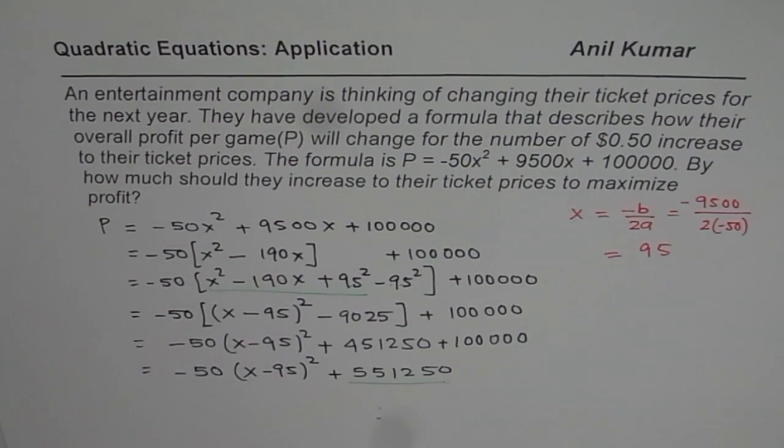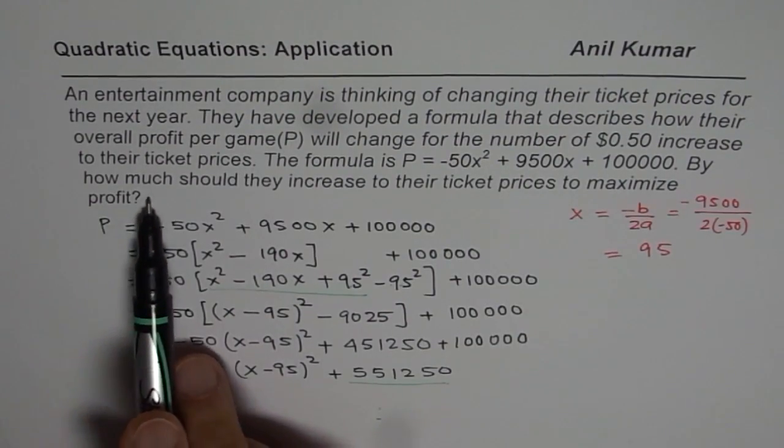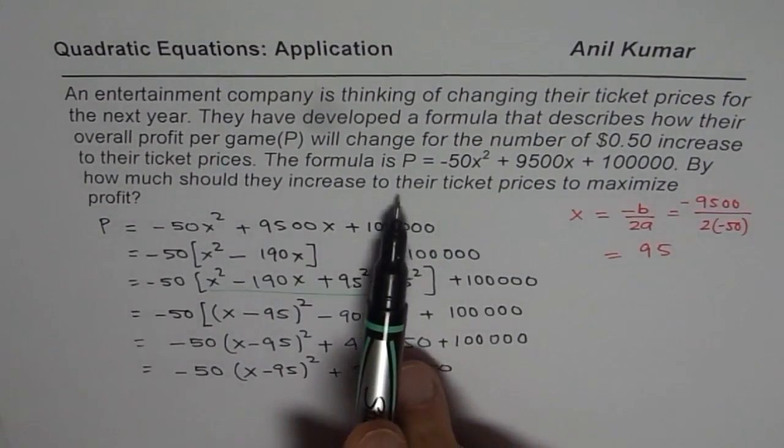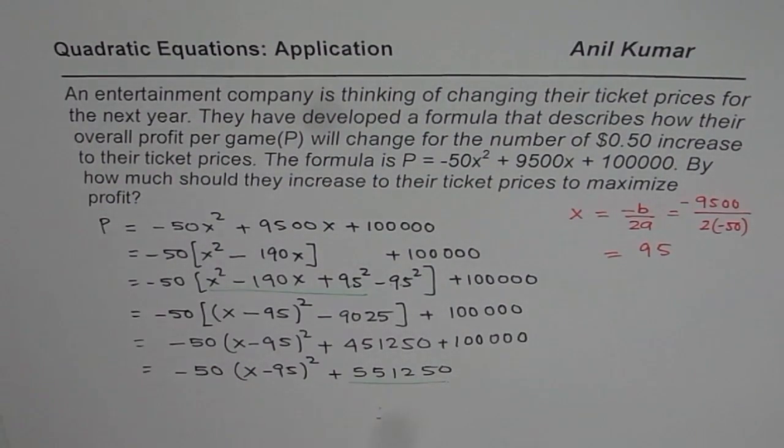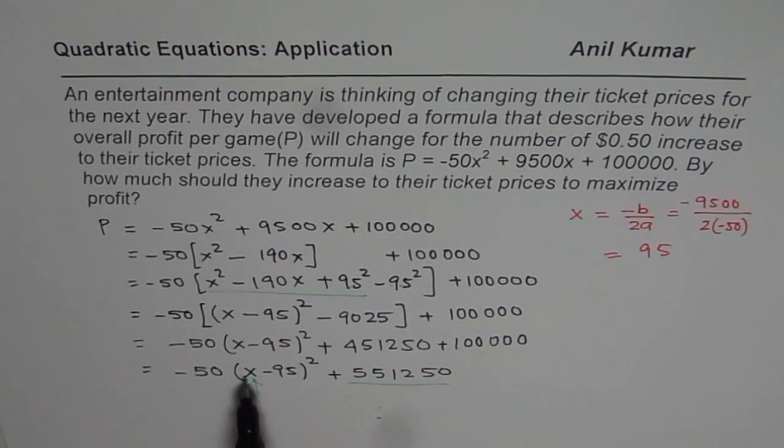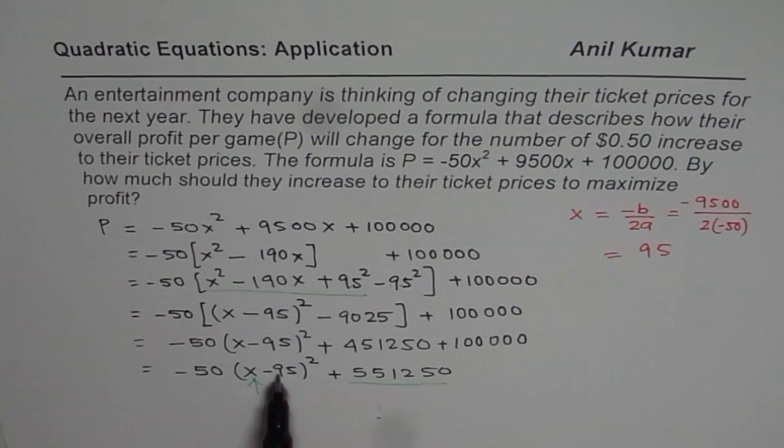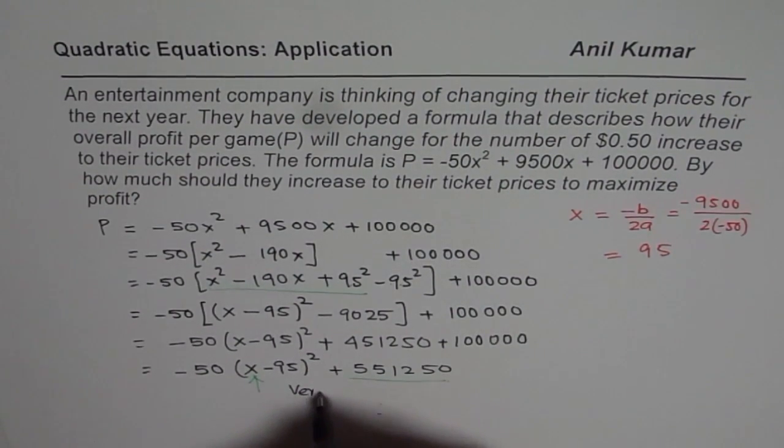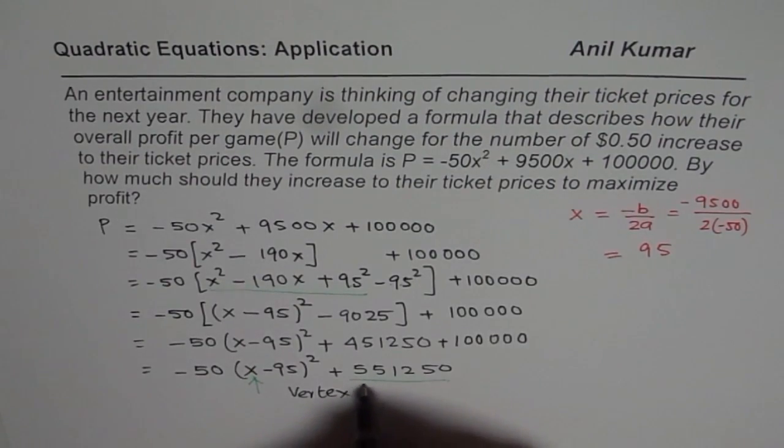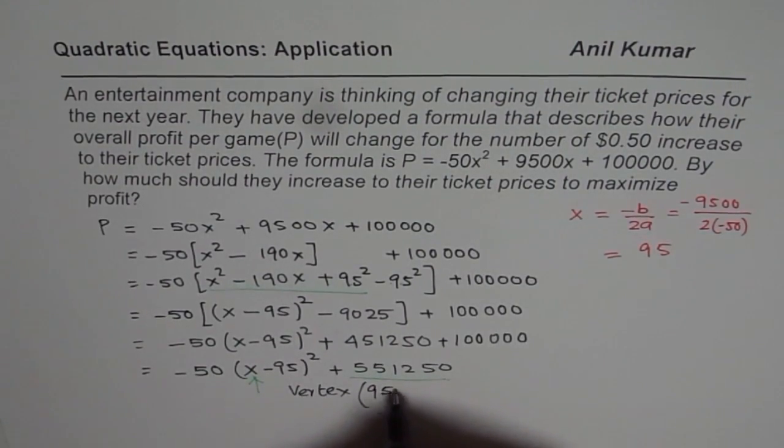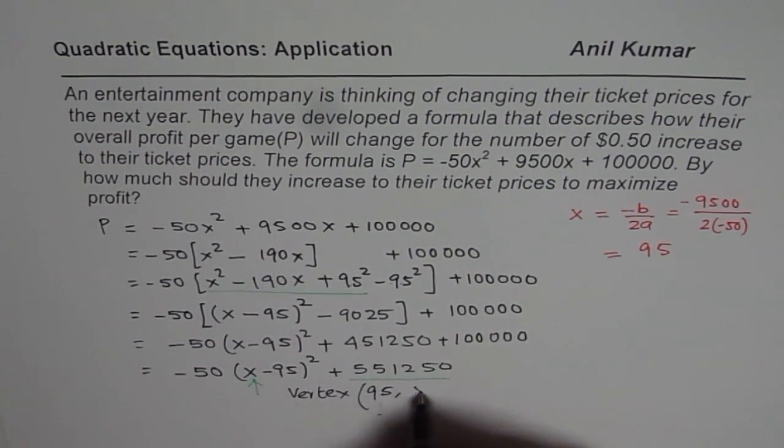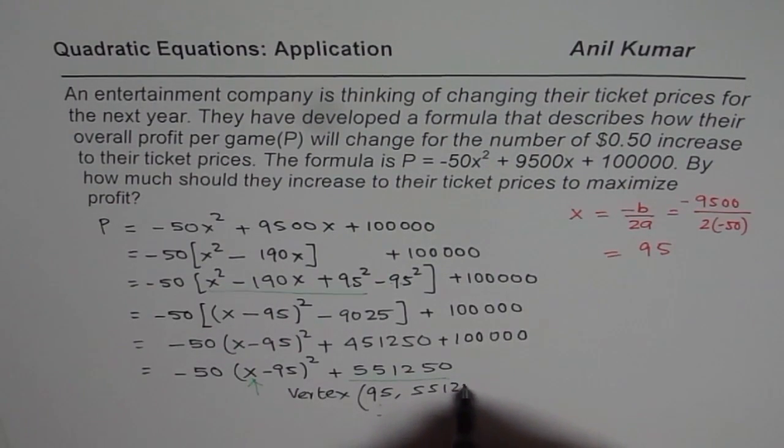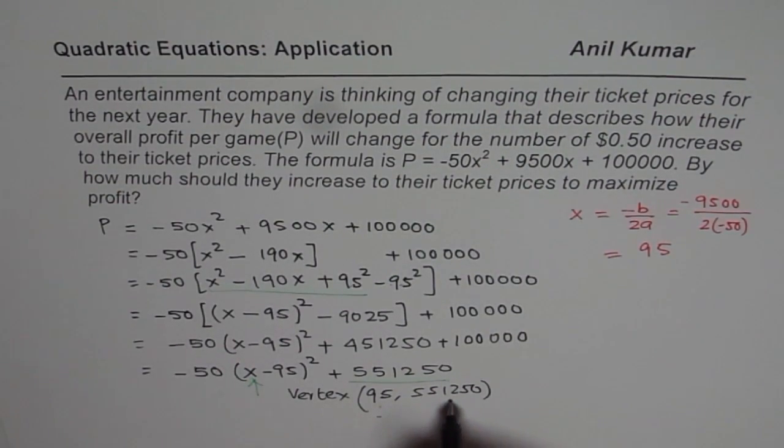Now the question is by how much should they increase their ticket prices to maximize the profit. Now we see x minus 95. To make it zero, to make it zero, x should be positive 95. So the vertex is: vertex indicates the increase in price is 95 and the profit is this, 551250. We are not asking for profit.